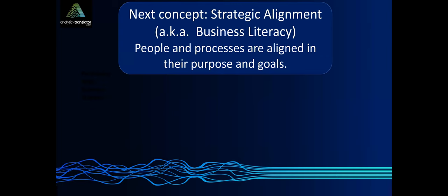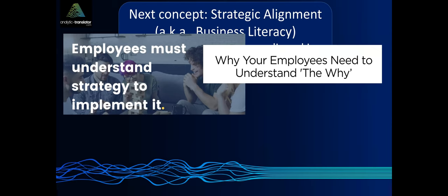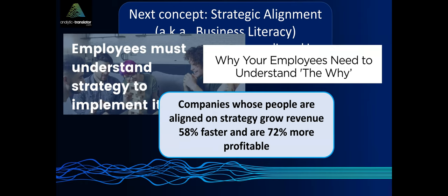It's, again, very popular in the business and leadership journals. It's very popular in management journals. And I'm going to call it business literacy. And strategic alignment means that all of the people in the organization and all of the processes are aligned with the goals, priorities, and purpose of the organization. Because if everybody's rowing in the same direction, everybody's pulling the same way, then the company runs better. And again, the journals just highlight this the same way they highlight data literacy. Employees must understand strategy if they're going to implement it. Your employees need to understand the why of their organization. And they highlight the companies whose people are aligned on strategy grow revenue 58% faster and are 72% more profitable. That is amazing, just by having everybody be aware.